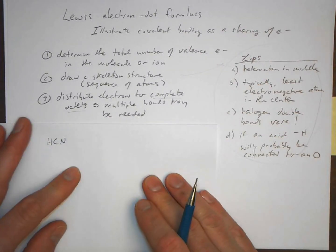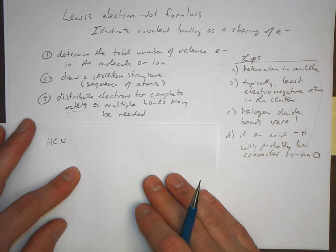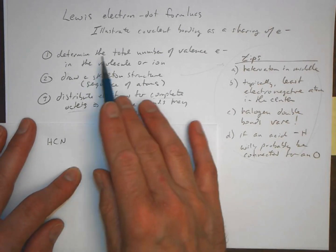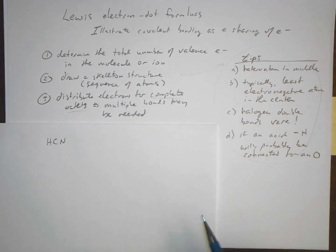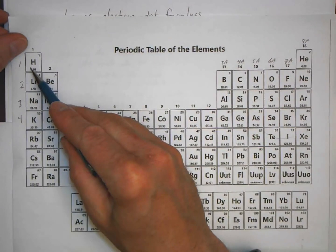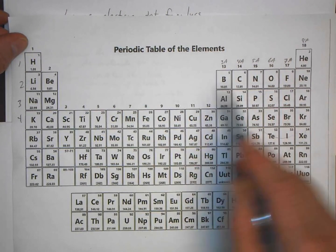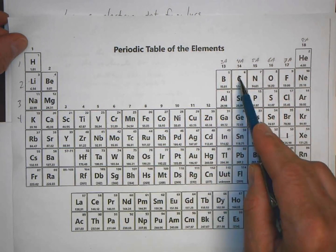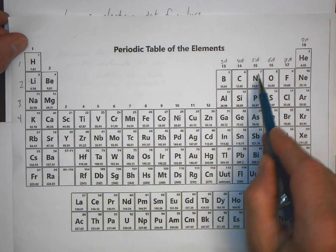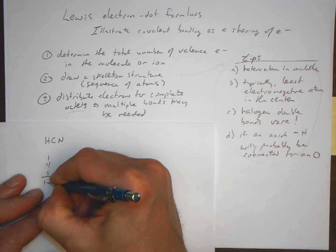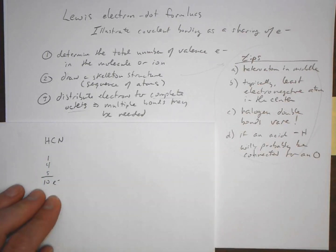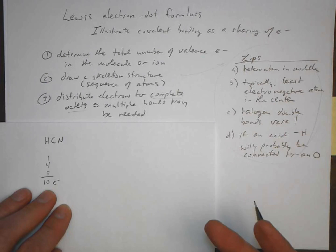Let's look at HCN. First, find the total number of valence electrons. Hydrogen has one valence electron, carbon has four, and nitrogen has five. One plus four plus five gives us ten valence electrons total to account for in this molecule.